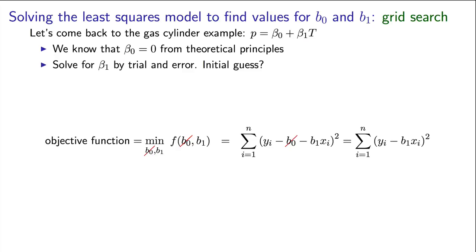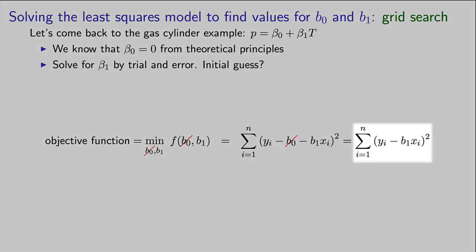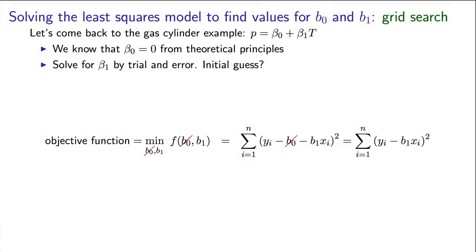Let me simplify the objective function here. You'll notice our only search variable remaining is b1. We're trying to estimate beta1 by varying this b1 value.